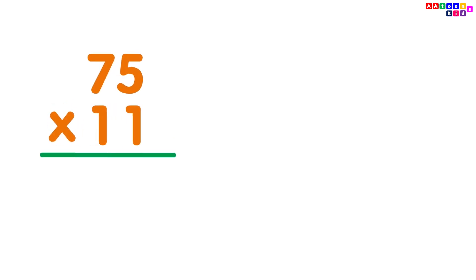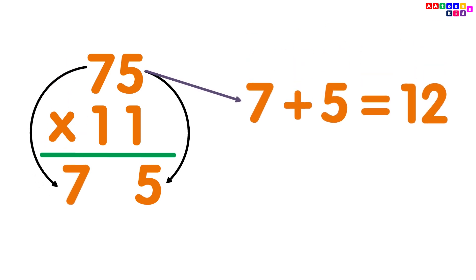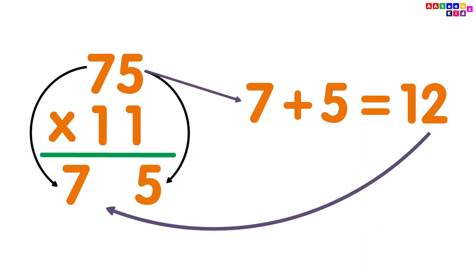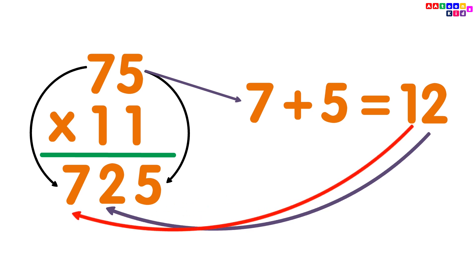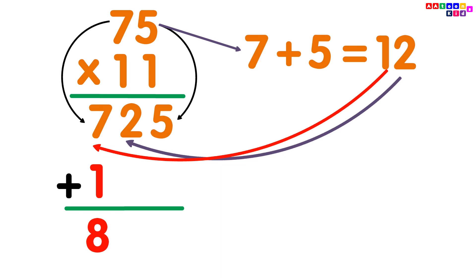75 multiplied by 11. Simply write the digits 7 and 5. Then add the digits: 7 plus 5 equals 12. Put the 2 between digits 7 and 5, then add 1 with 7. You will get your answer 825. So, 75 multiplied by 11 is equal to 825.